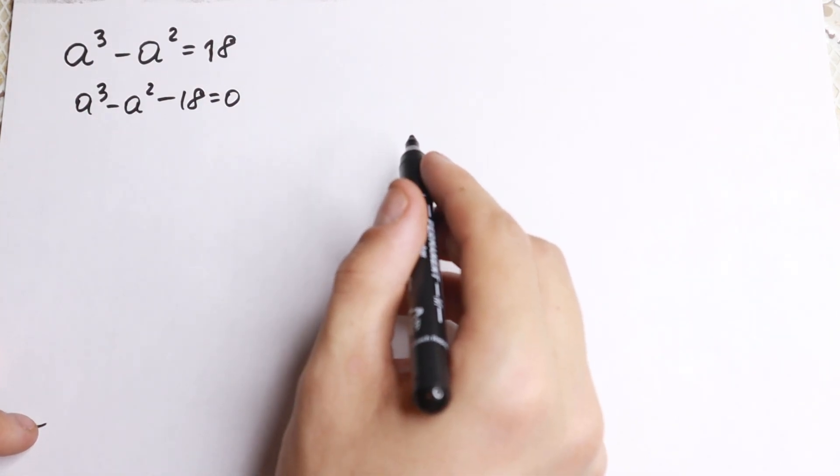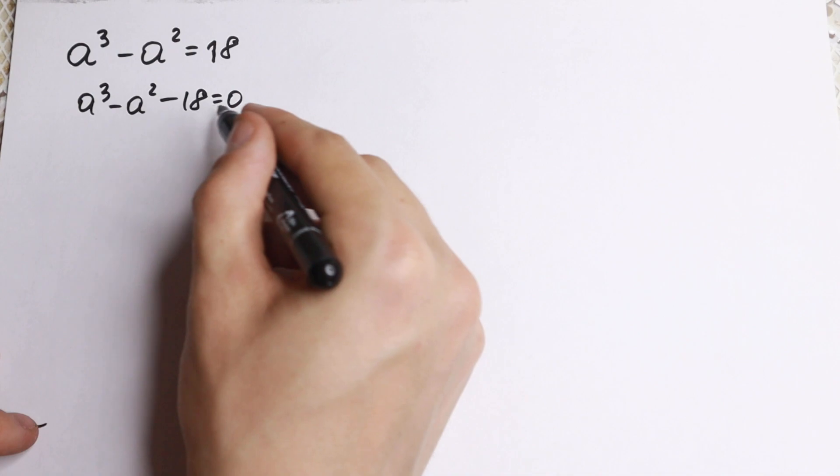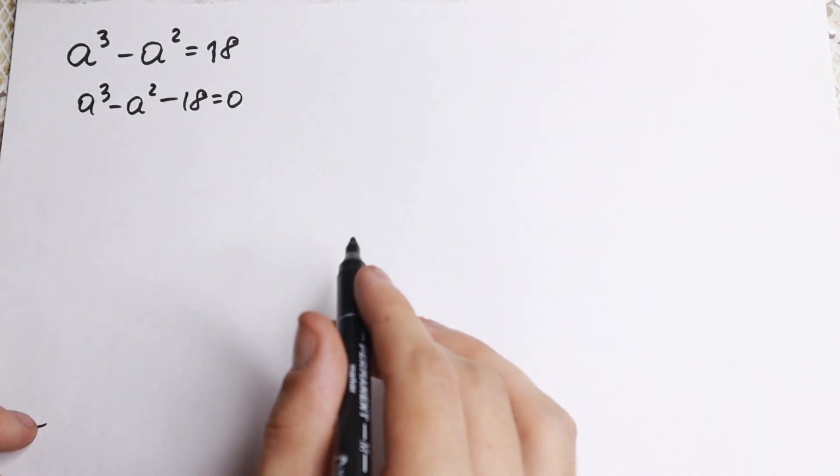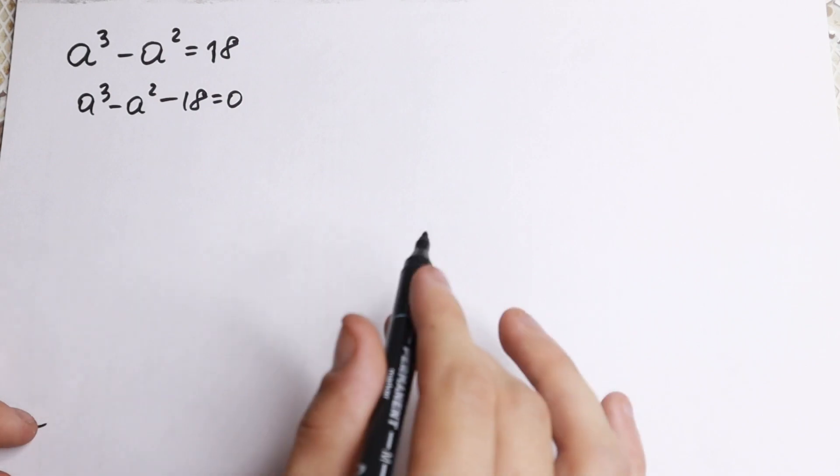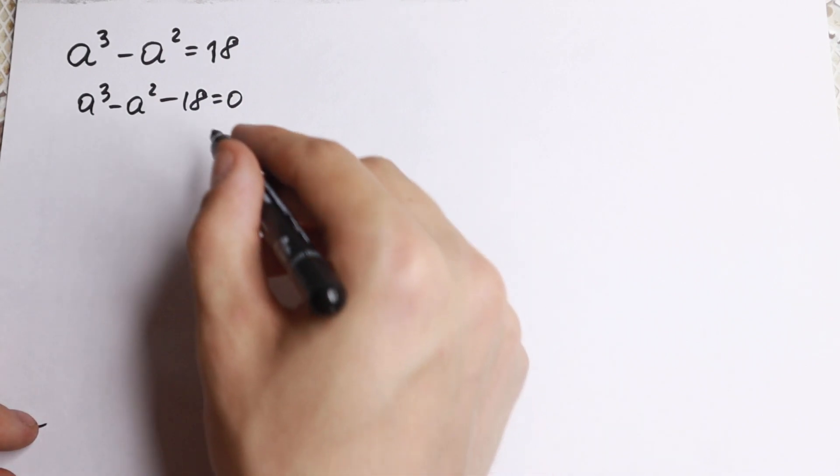And this is our cubic equation. We have a third power, a square, and we don't have the first power, but we have a constant, so it's still a cubic equation. There are a lot of methods to solve this cubic equation, real methods using formulas, using different tricks, but I want to show you my approach.